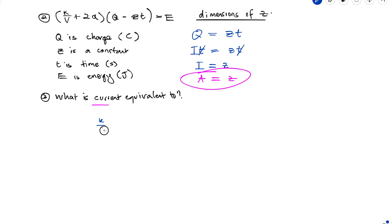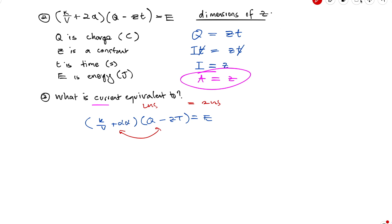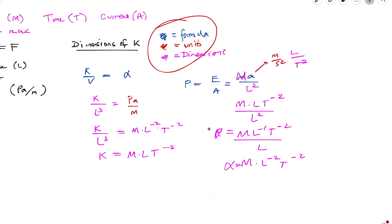Okay, and then with question three, we're going to work out what is current equivalent to. So even though we've already worked out that z has the same dimensions as current, where current is a, we can think about this question in another way. So if we're multiplying two brackets together to give the right-hand side—so k over v plus 2α, and then multiplying that by q minus zt is equal to e—what that also means is that the dimensions of the left-hand side must be the same dimensions as the right-hand side, and we can get the dimensions by multiplying the dimensions of these two components here.